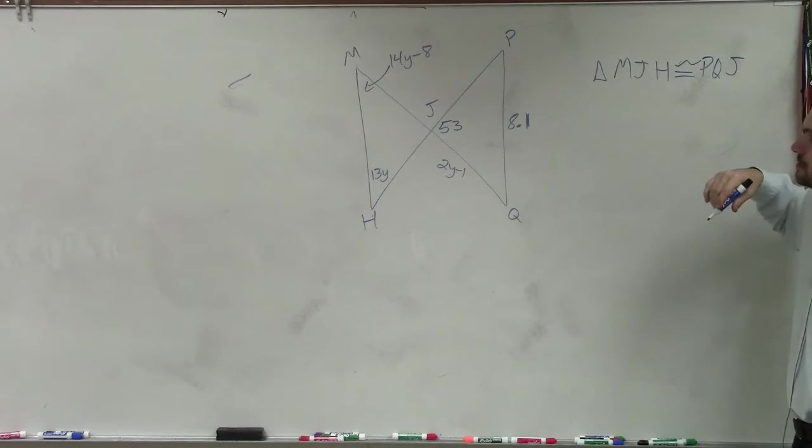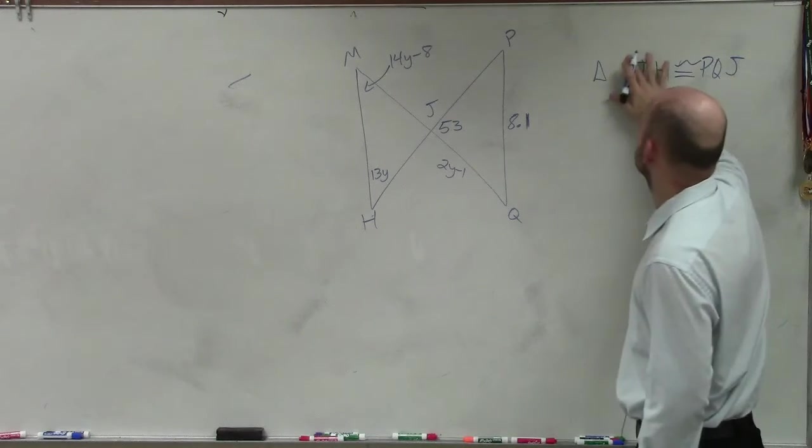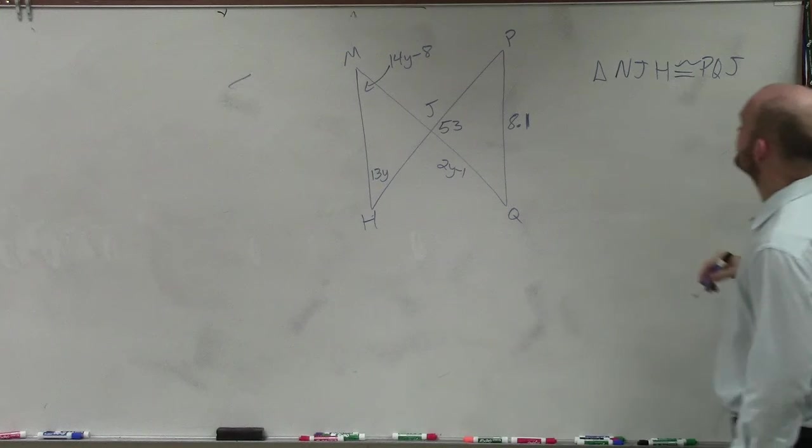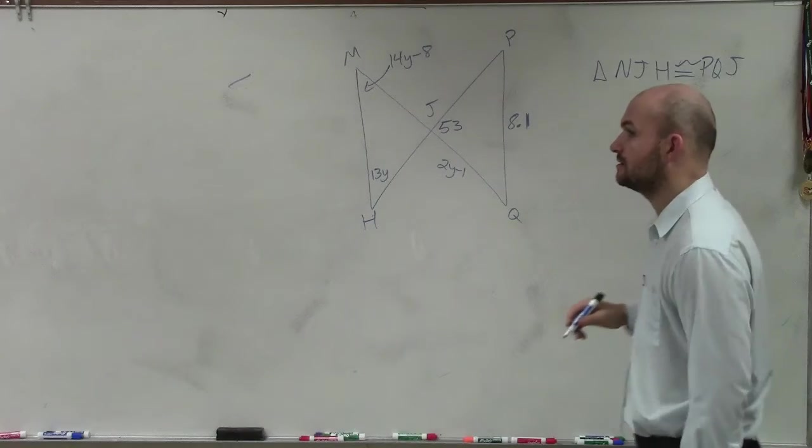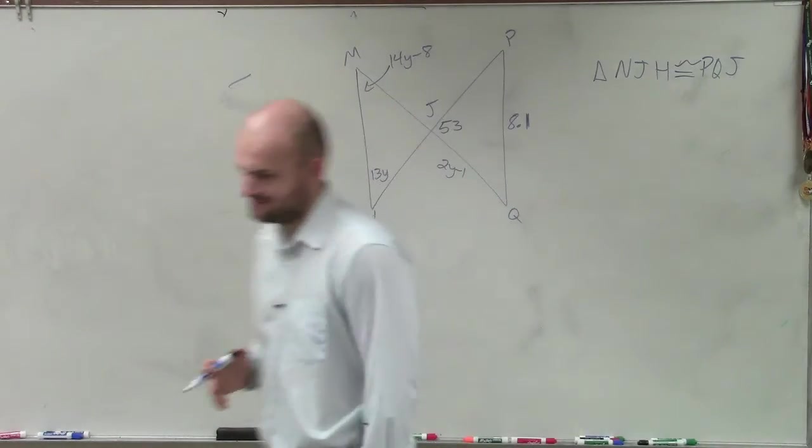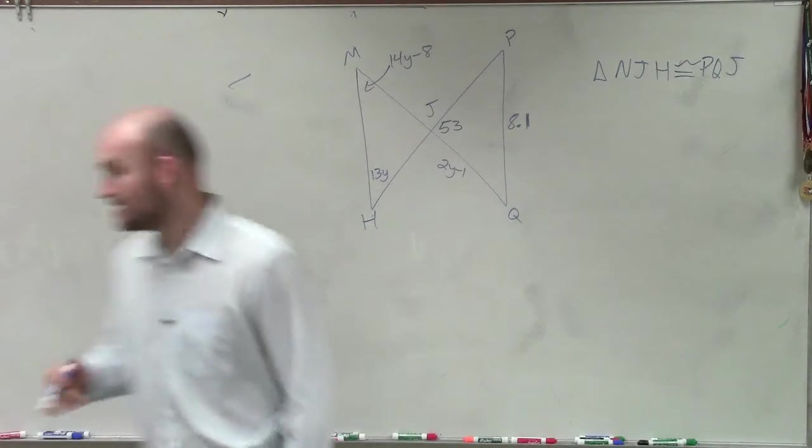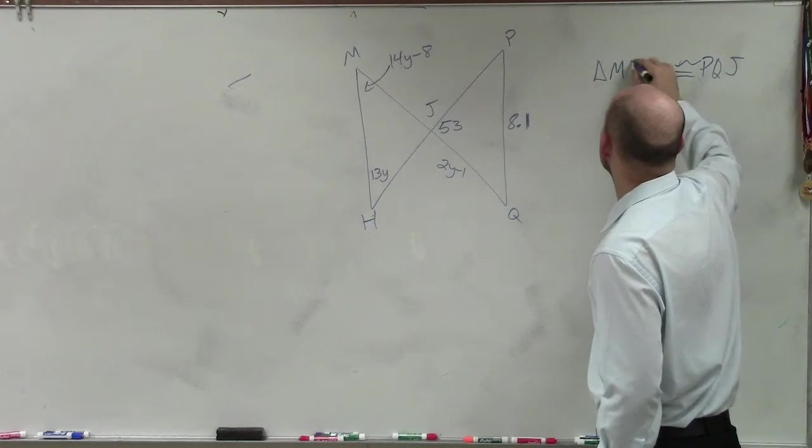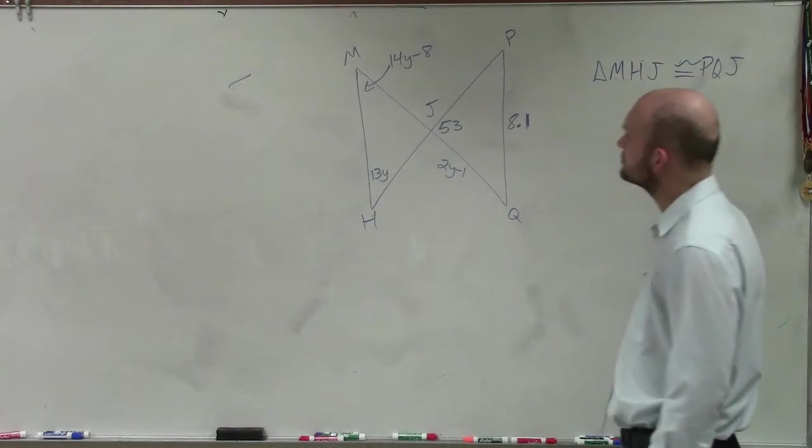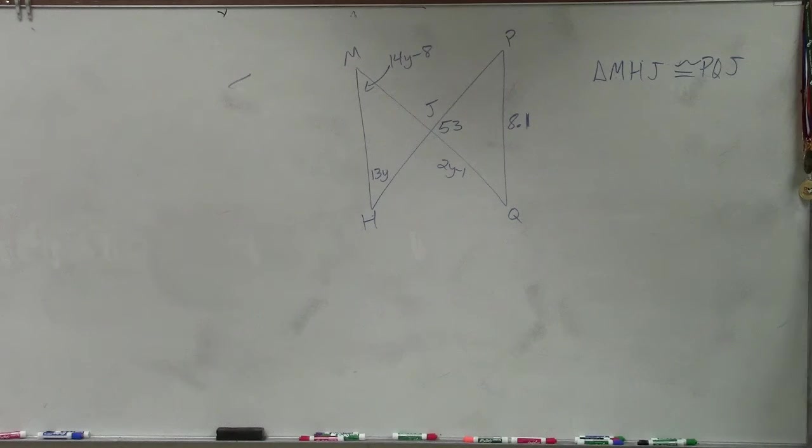So it's what? Oh, is it? So MJH is congruent to... no, that's not right. It's MHJ. So MHJ is congruent to PQJ. Okay, very good.